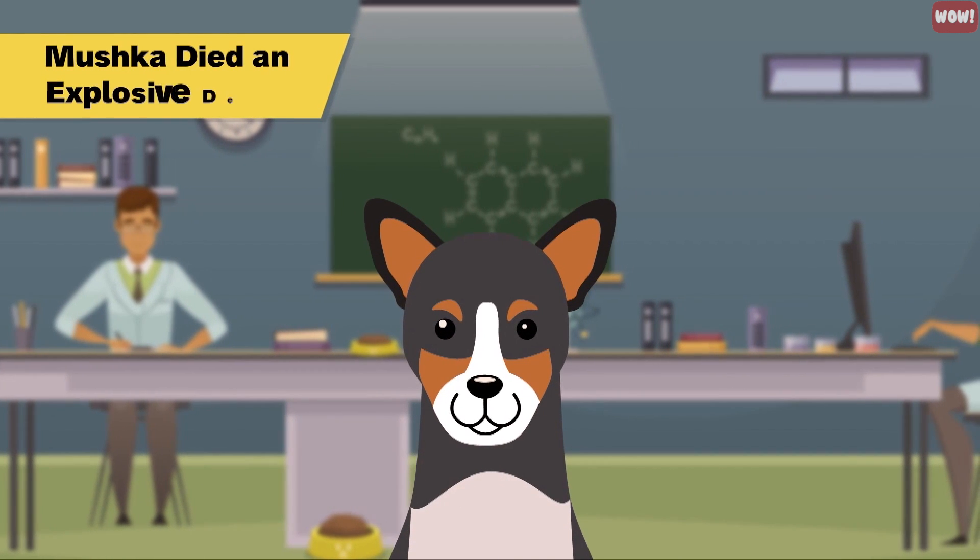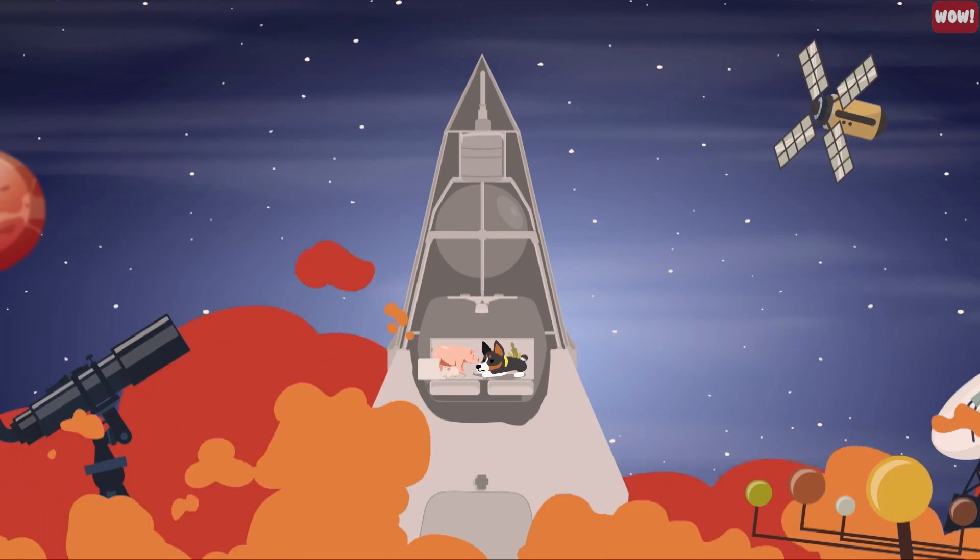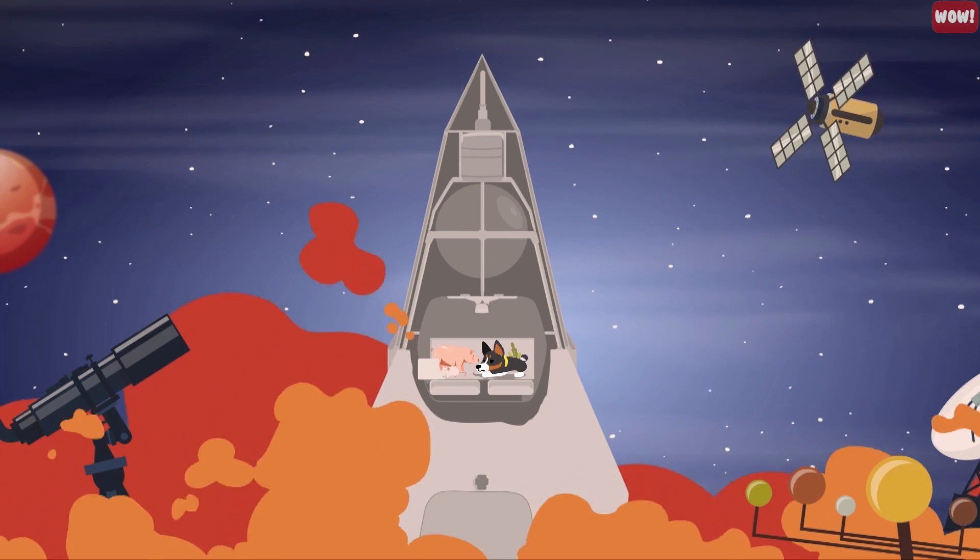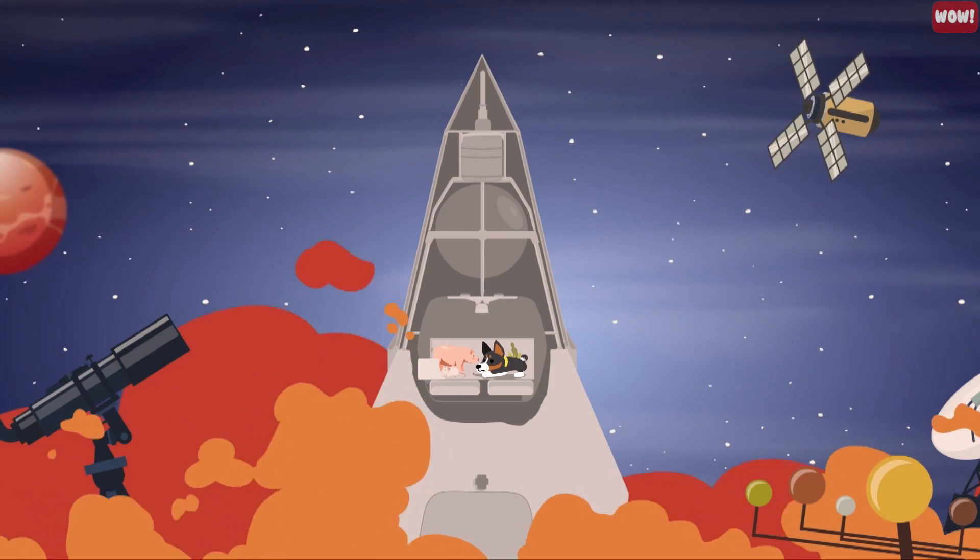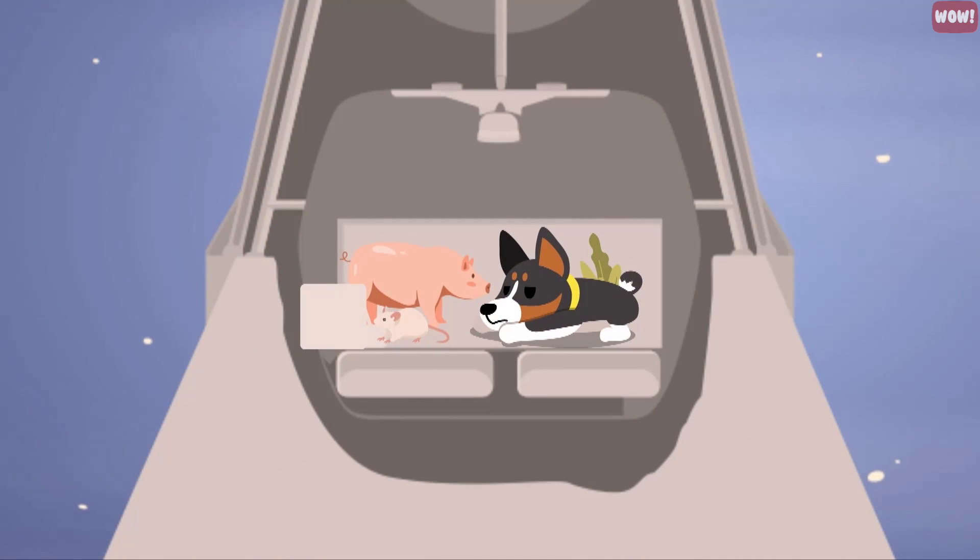Number 9: Mushka died an explosive death. After Laika's death, Mushka, the control dog that was used to test the life support system for Sputnik 2, was sent up into space with a few other animals. These included guinea pigs, plants, mice, rats and other dogs, with a mission to study the effects of radiation.